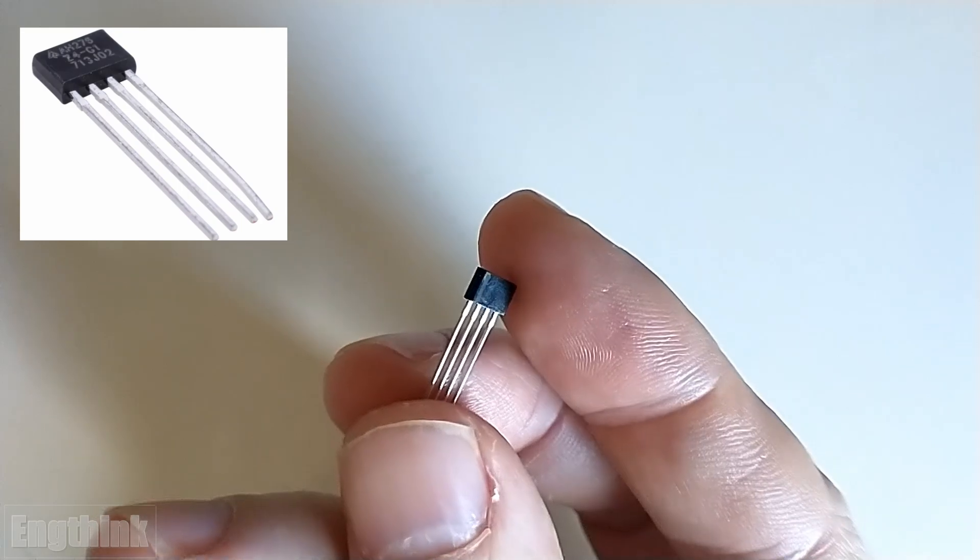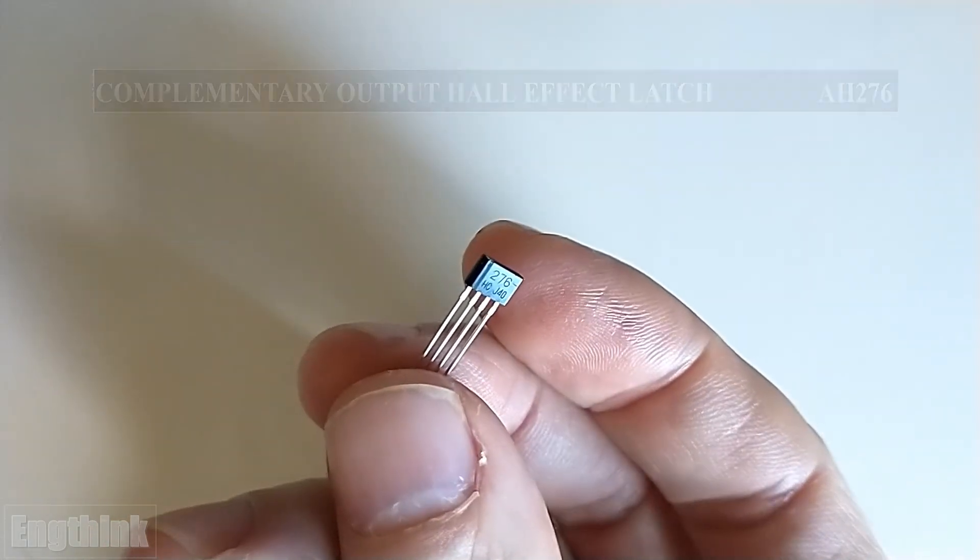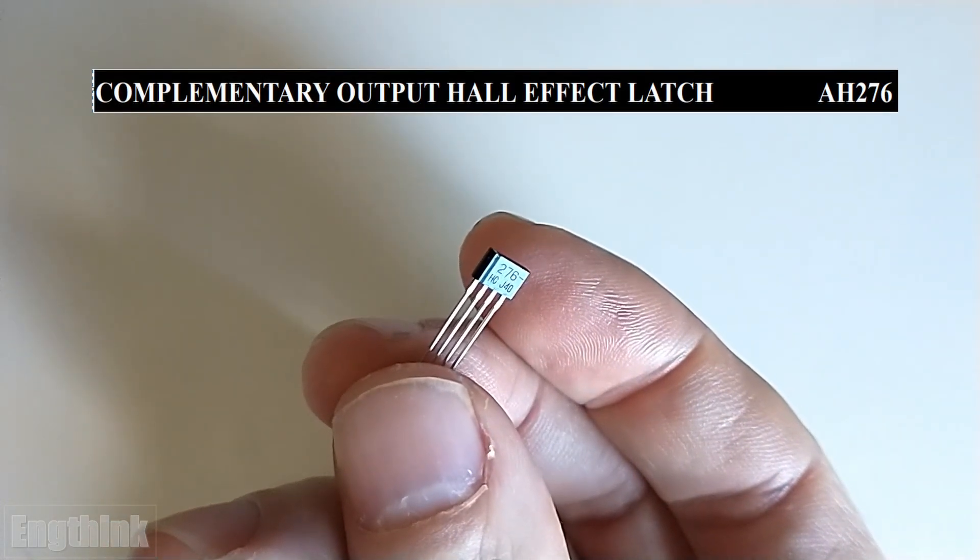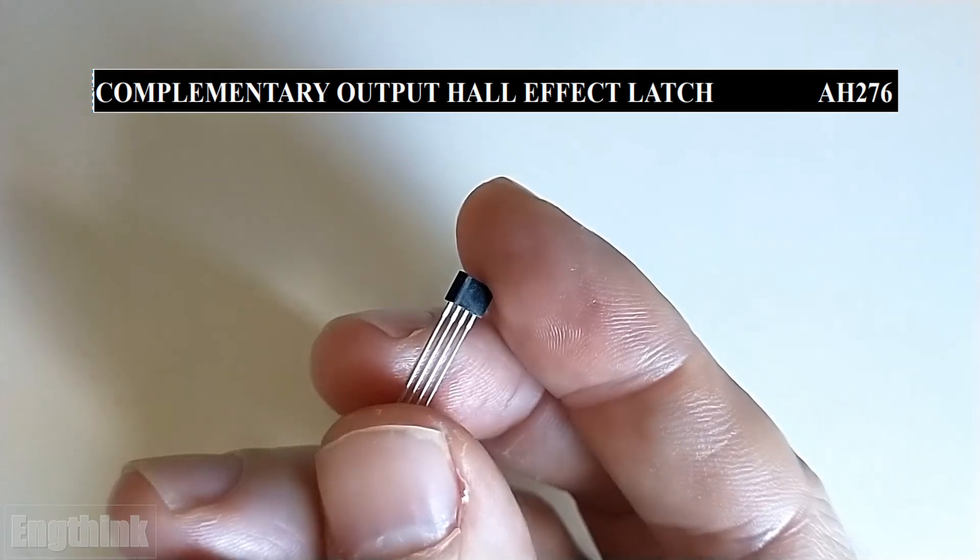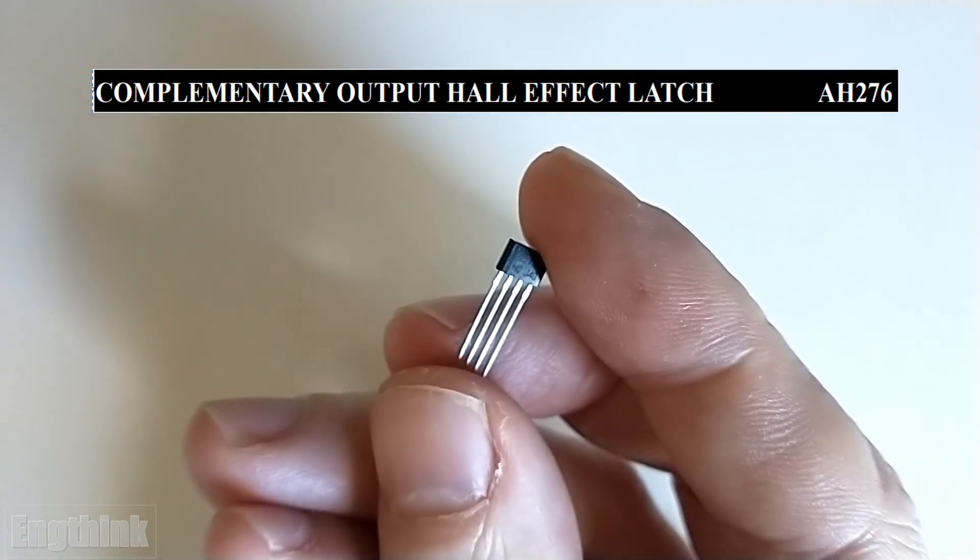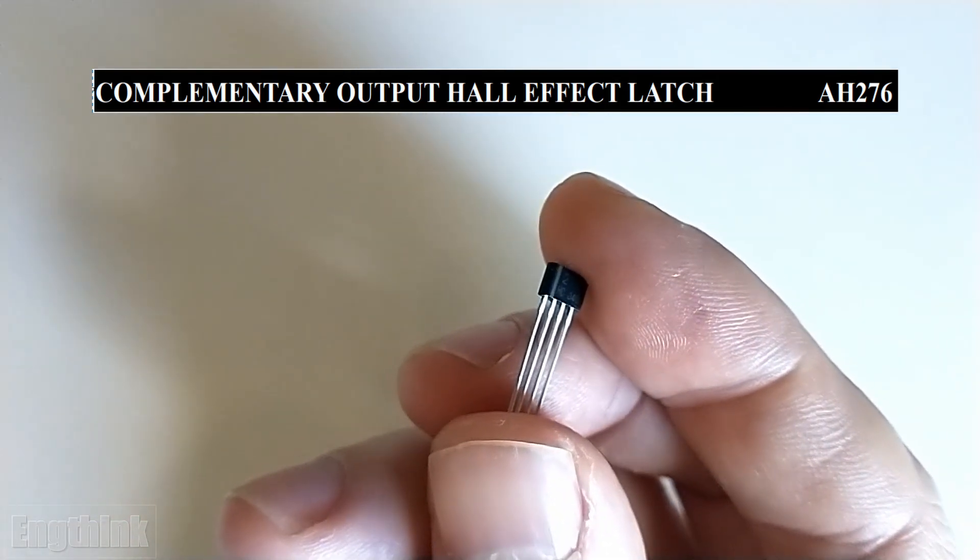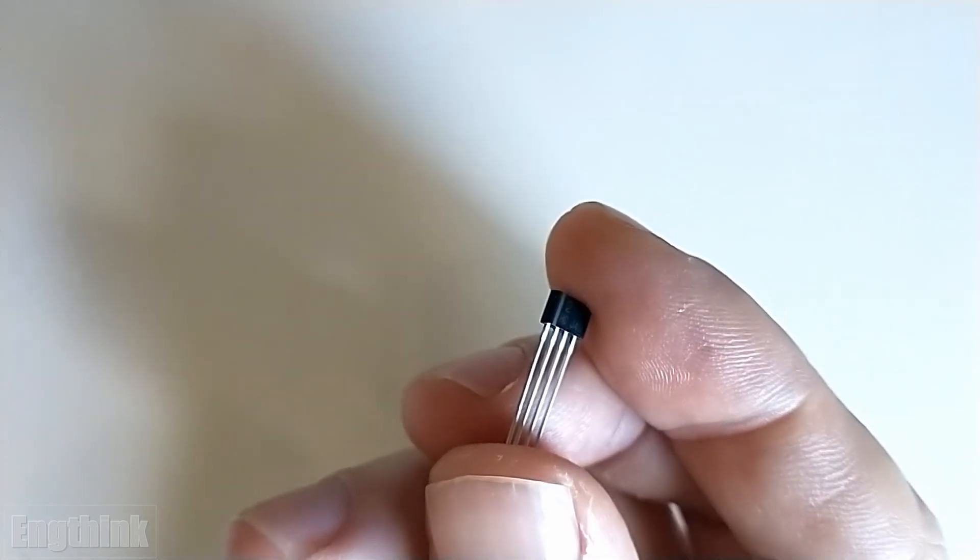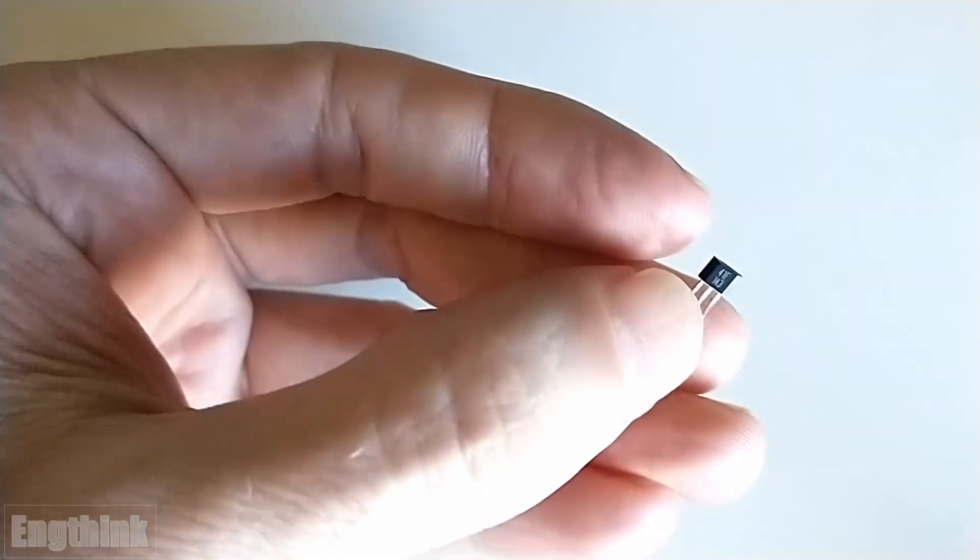The component code of this one is AH276. According to the datasheet, it's a complementary output Hall Effect latch sensor. And as we can see, this one has four pins different from the others that we already tested in this channel.